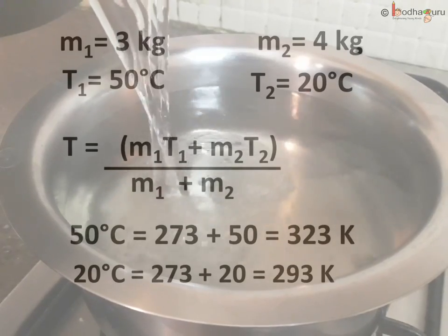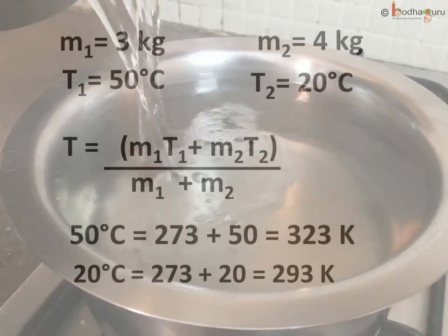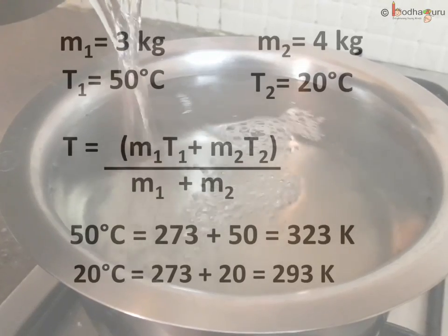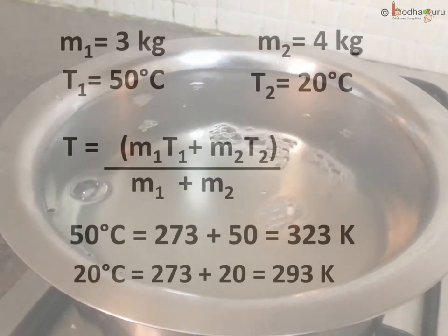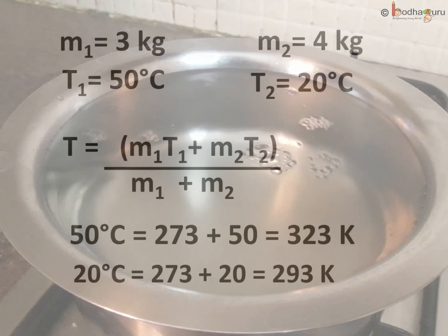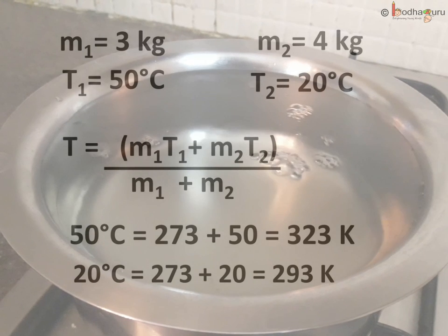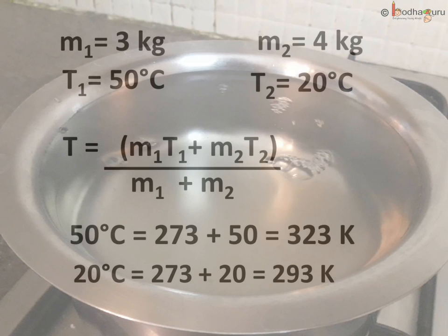T1 equals 50 degrees Celsius and T2 equals 20 degrees Celsius. So the temperatures are given in degrees Celsius and the mass is in kg.